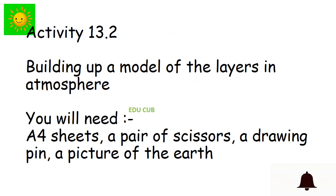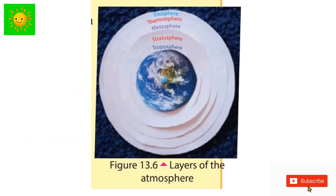As an activity, you have to build up a model of layers in atmosphere. You need A4 sheets, pair of scissors, a drawing pin, and picture of Earth. Let's see what you have to do in here. Cut a big circle from A4 sheet in the maximum size.